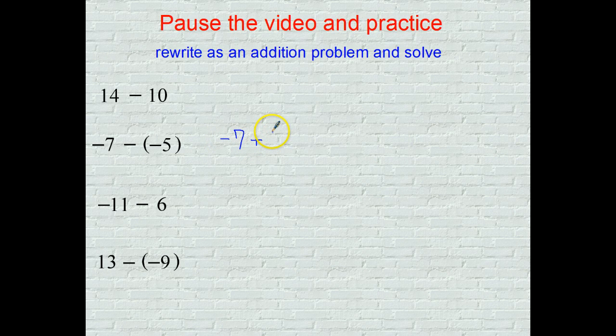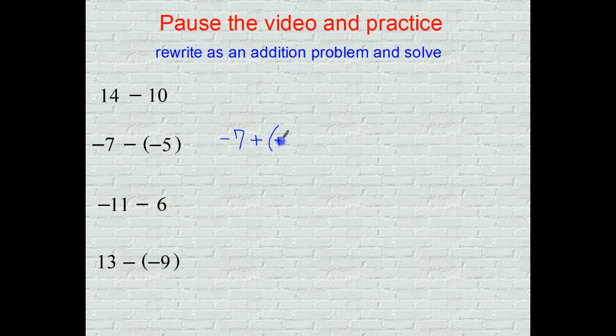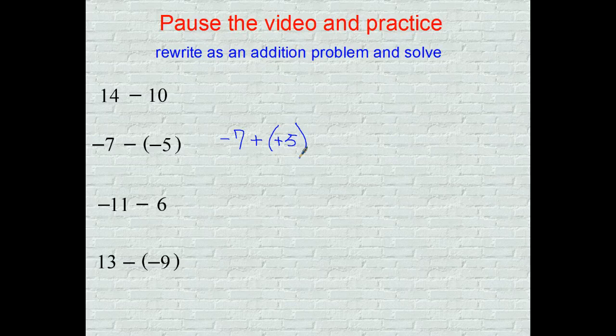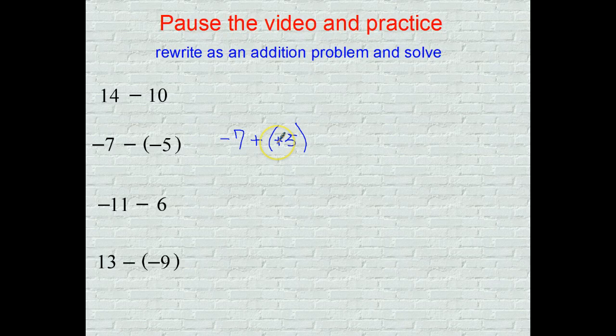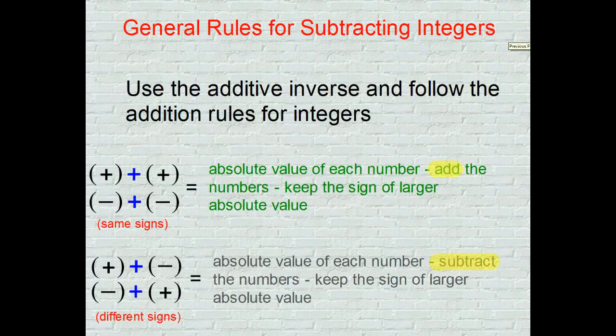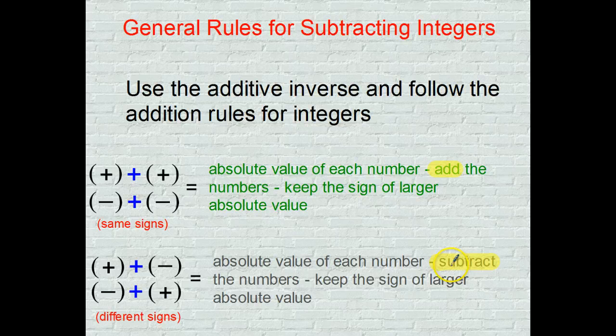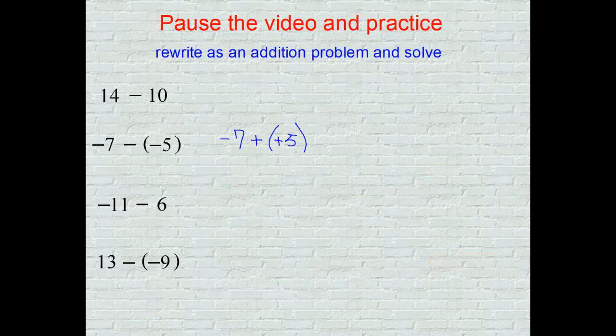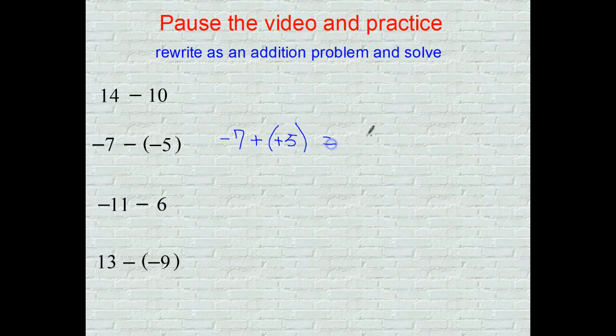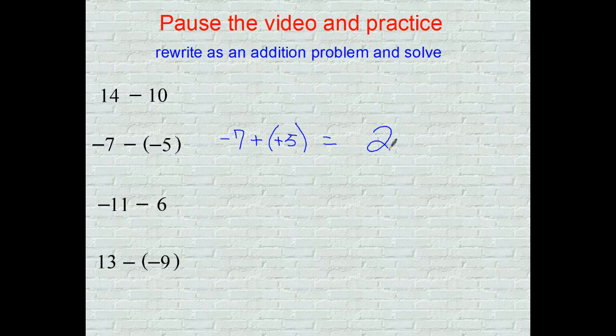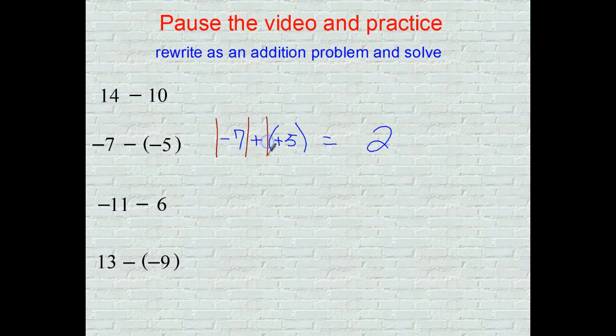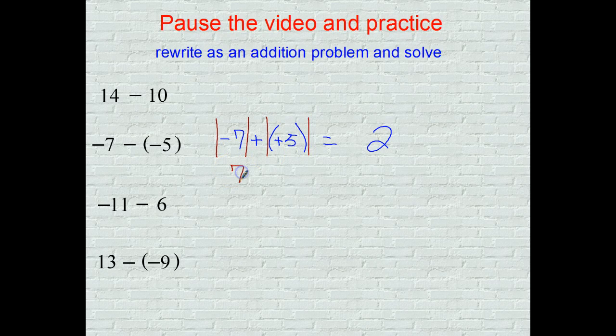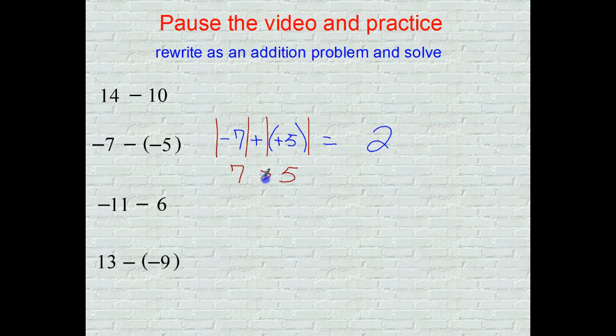Now follow your adding rules from before. I have a negative added to a positive. Go back to your chart: negative added to positive means subtract the values, so we're going to get some kind of 2. What kind of 2?